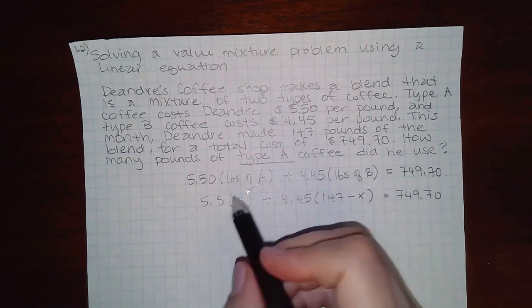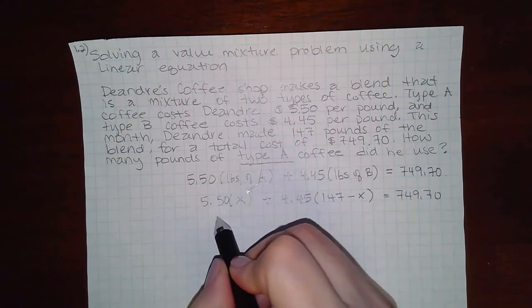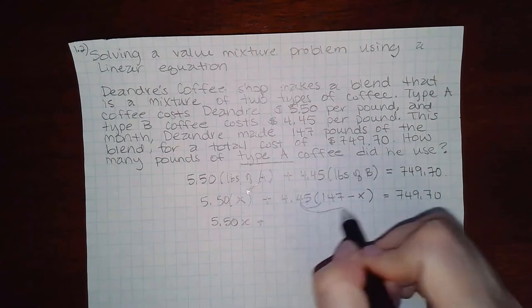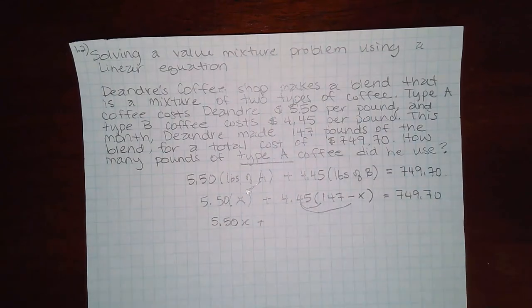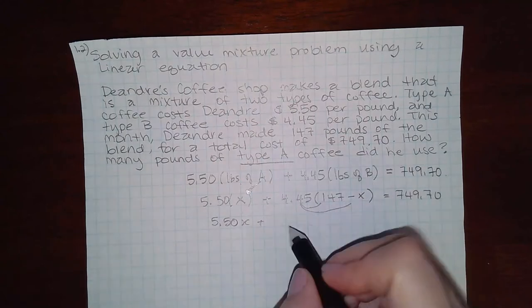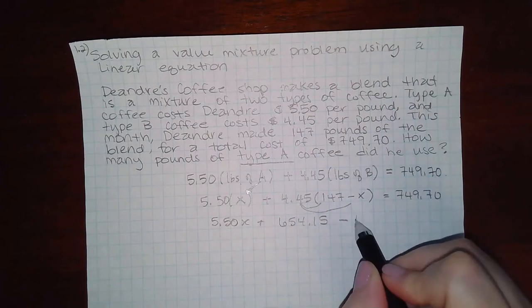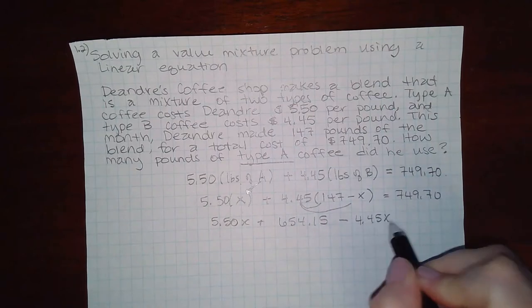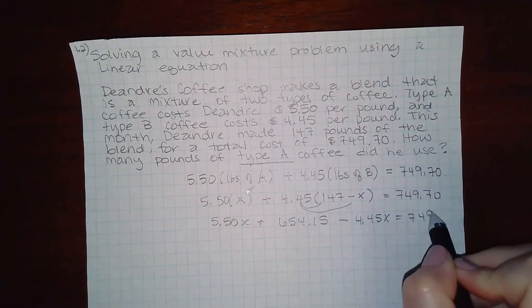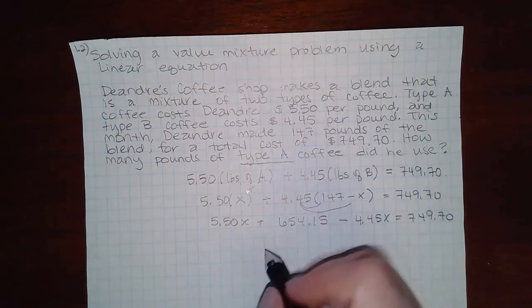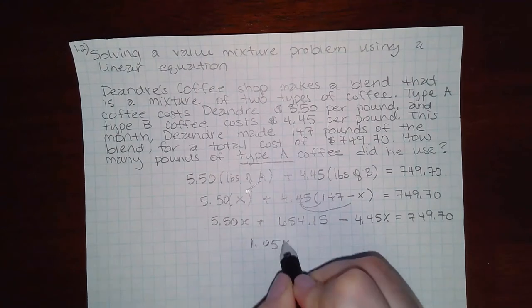So let's see. This would be 550X. This would actually be 654.15 minus 4.45X. And if I combine my like terms, I get 1.05X.